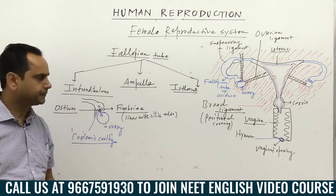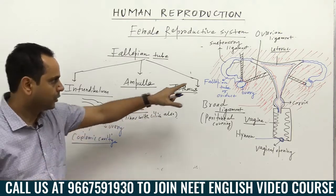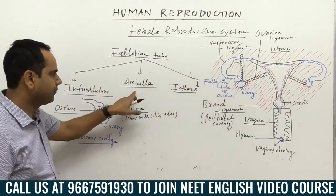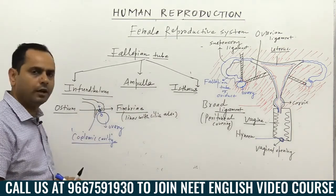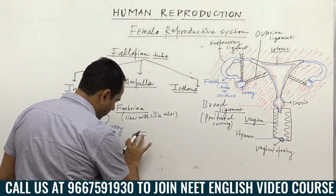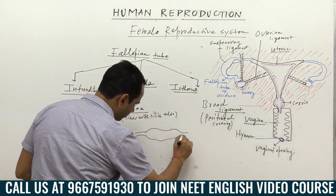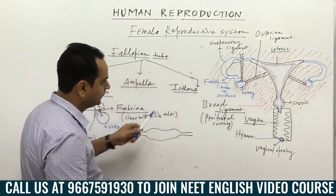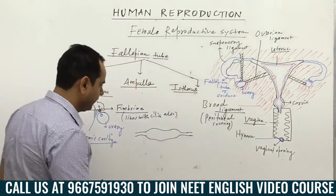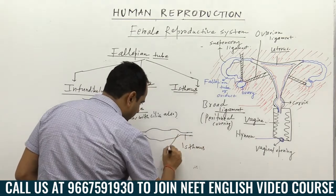After the infundibulum, there is a broad part — the longest and broadest part of the fallopian tube — called the ampulla. Finally, the isthmus is the narrower part that enters into the uterine cavity.